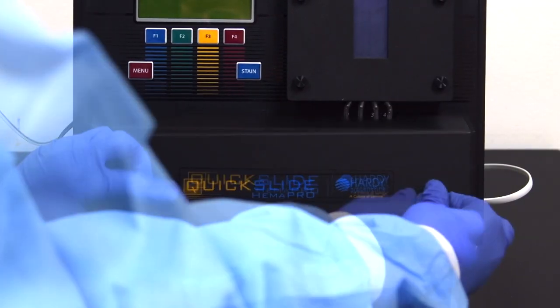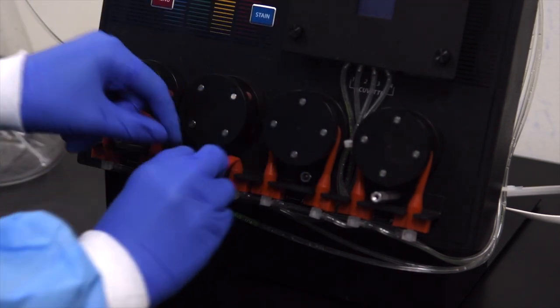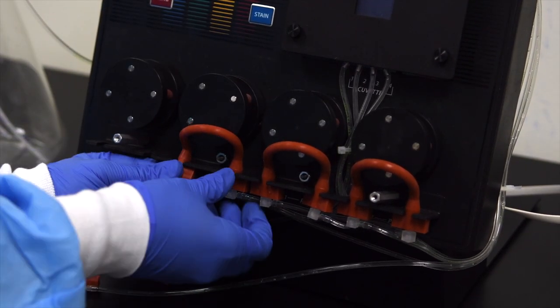Remove the front panel. Stretch the old orange pump tubes off of the rollers. Next, remove the pump tubes from the brackets.